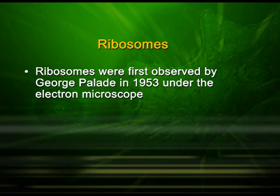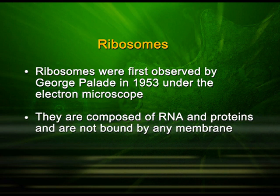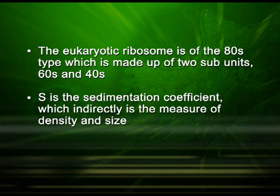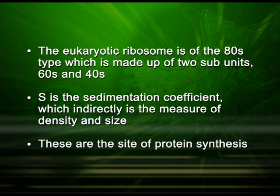The ribosomes are organelles not bound by membranes. They were also seen in the prokaryotic cell. Ribosomes were first observed by George Pallade in 1953 under the electron microscope. They are composed of RNA and ribosomal proteins, but are not bound by any membrane. The eukaryotic ribosome is of the 80S type, made up of two subunits — the 60S and the 40S. 'S' is the sedimentation coefficient, which indirectly measures the density and size of the ribosomes. The ribosomes are the site of protein synthesis.